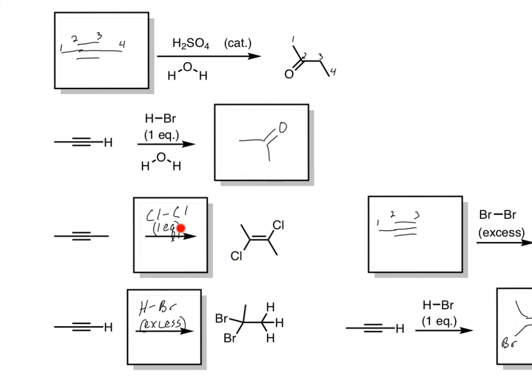If we want to do one Cl2, again, be careful. One equivalent. We added two Cls in the trans addition to an alkyne, one equivalent. If we want to add two bromines, we need to say excess. HBr in excess. Gotta be careful with the excess or one equivalent.